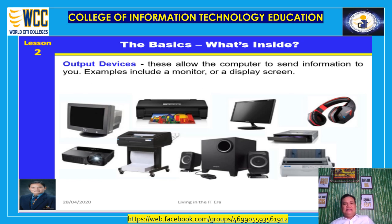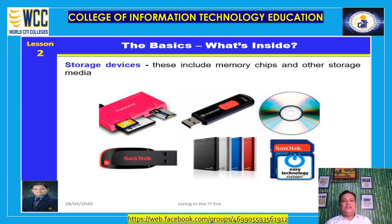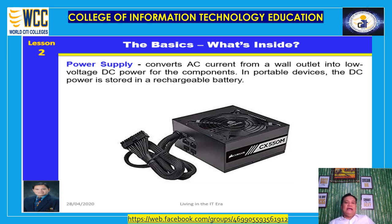Output devices allow the computer to send information to you — examples include a monitor or display screen. Storage devices include memory chips and other storage media such as flash drives, CD-ROMs, and diskettes. A power supply converts AC current from a wall outlet into low-voltage DC power for the components. In portable devices, the DC power is stored in a rechargeable battery. We will examine some of these internal components in further detail.